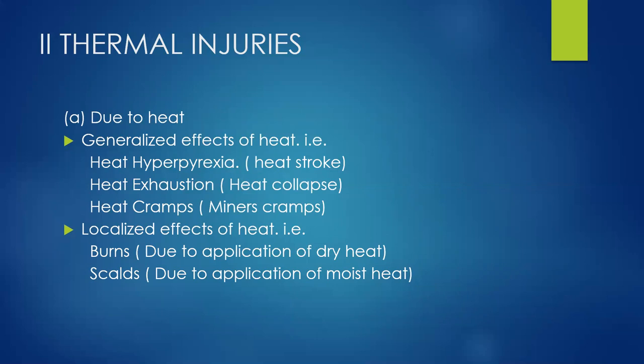Thermal injuries can be caused by heat. Heat can cause a generalized effect — affecting the whole body — or a localized effect affecting certain parts. Generalized effects of heat include heat hyperpyrexia or heat stroke, heat exhaustion or heat collapse, and heat cramps. The localized effect of heat includes burns (due to dry heat) and scalds (due to moist heat).